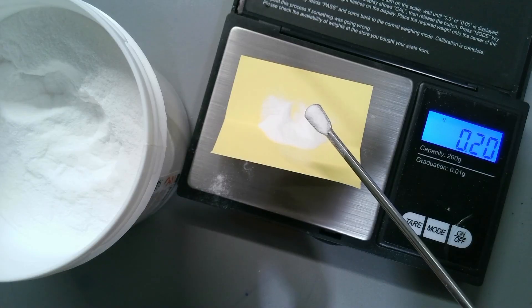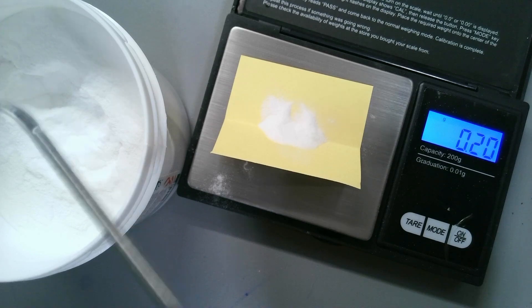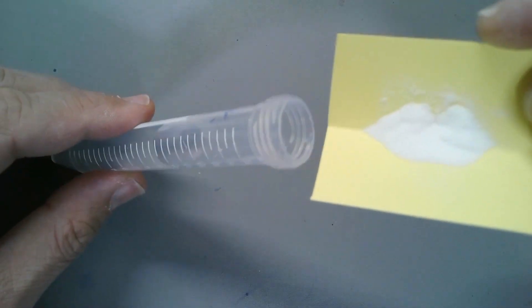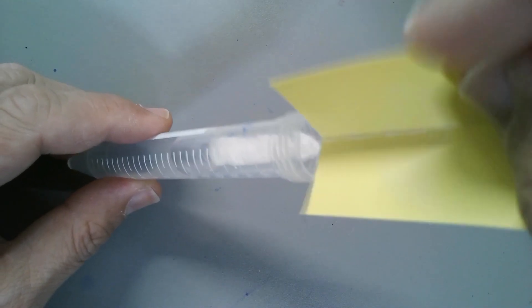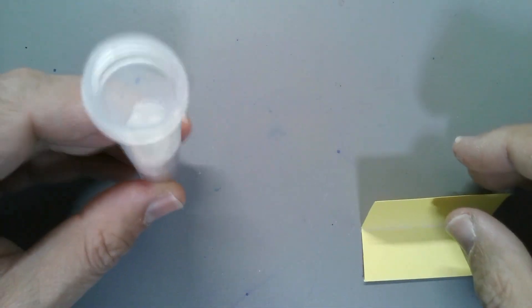If you want to make methyl cellulose yourself, I recommend that you take 0.2 grams of methyl cellulose and add approximately 10 milliliters, 10 grams of water. You resuspend this properly, wait maybe for a day or so for the methyl cellulose to completely dissolve. And then you get a very clear and very viscous solution.